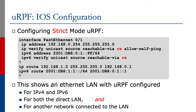Now let's look at some configuration examples of how you would configure this using Cisco IOS. Each vendor will have a similar style of how unicast reverse path forwarding is configured. This example shown on the slide shows an Ethernet LAN with URPF configured for IPv4 and for IPv6. The example shows a URPF configuration that will handle both a direct LAN and another network connected to the LAN.